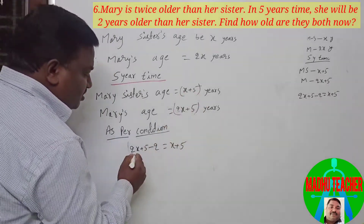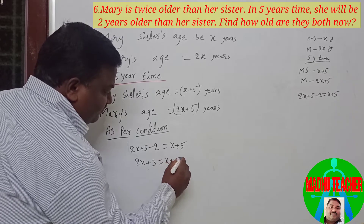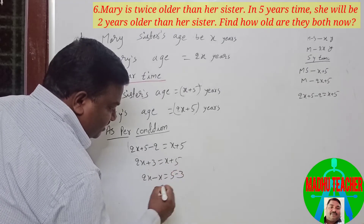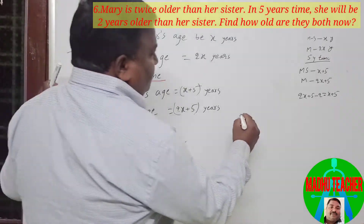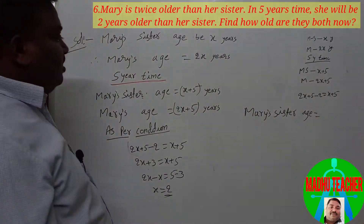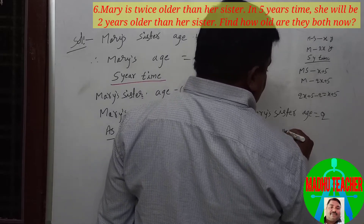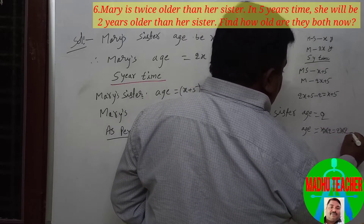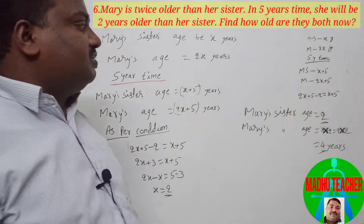Solving: 2x + 3 = x + 5. Taking x to the left side: 2x - x = 5 - 3, so x = 2. Mary's sister's age is x = 2 years, and Mary's age is 2x = 2 × 2 = 4 years.